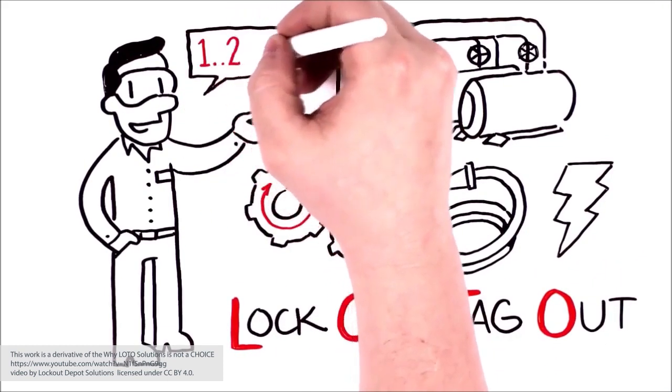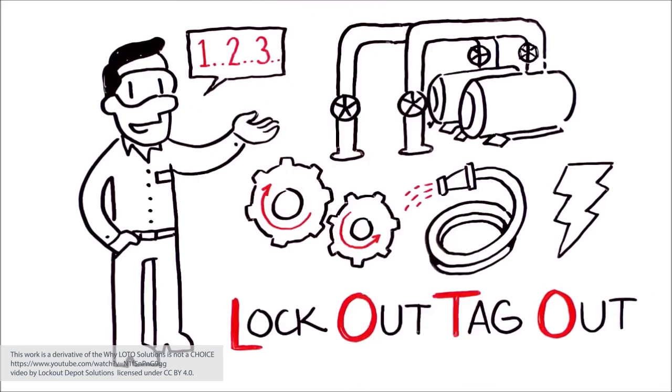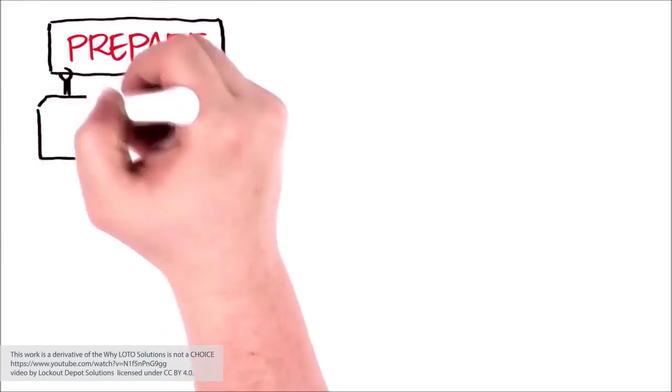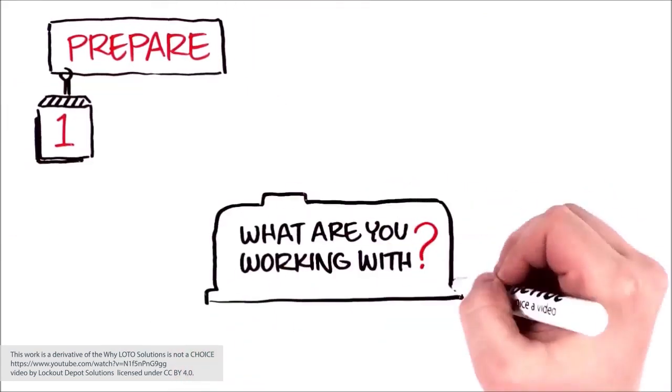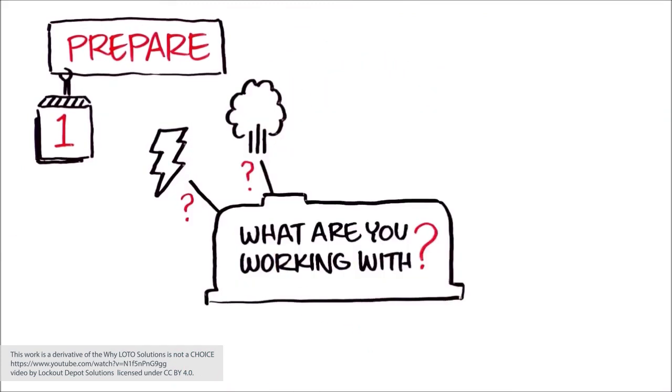Let's discuss the step-by-step process of executing LOTO procedures while safely performing your work. First, prepare. Ask yourself appropriate questions: What are you working with? Does the equipment only have electrical and pneumatic energy, or does it have several different sources? Can you use the applicable LOTO procedures to figure out the type and magnitude of all the energy sources?